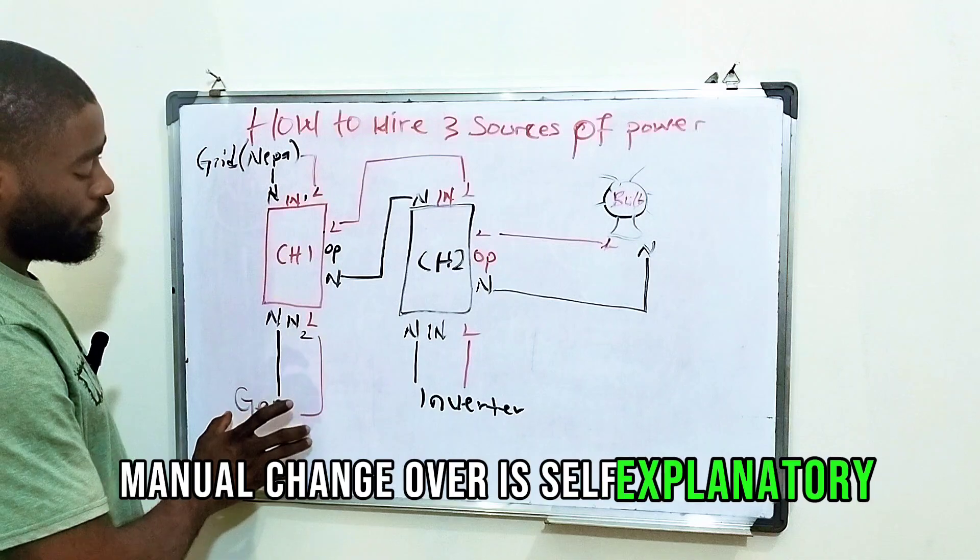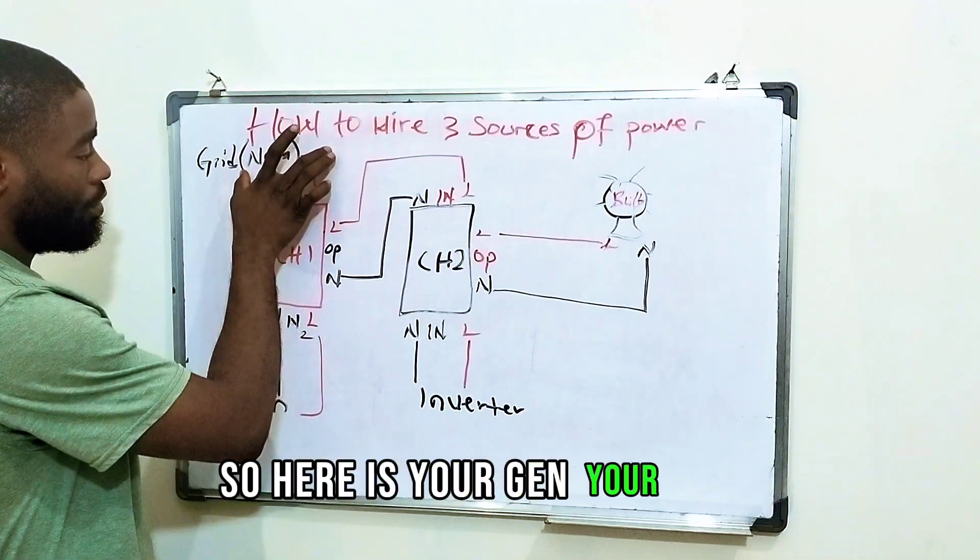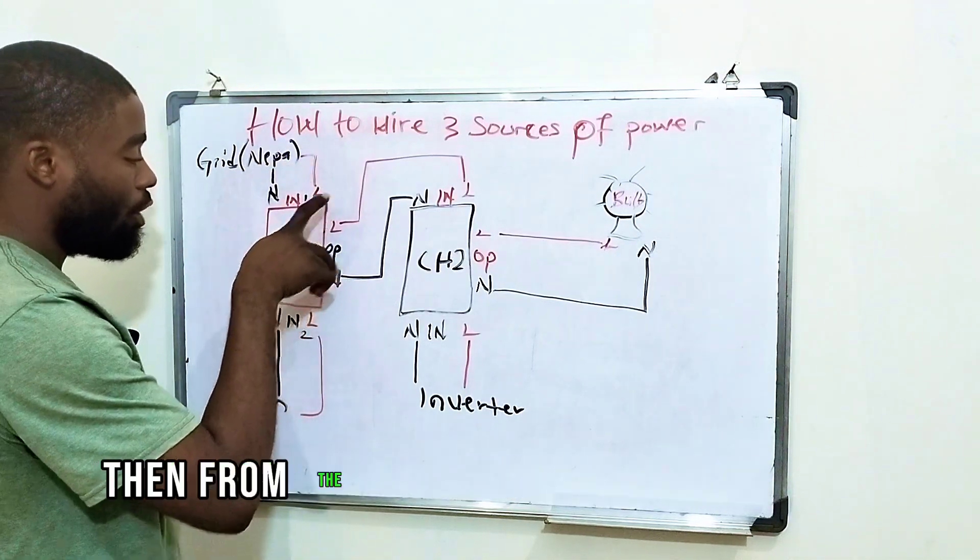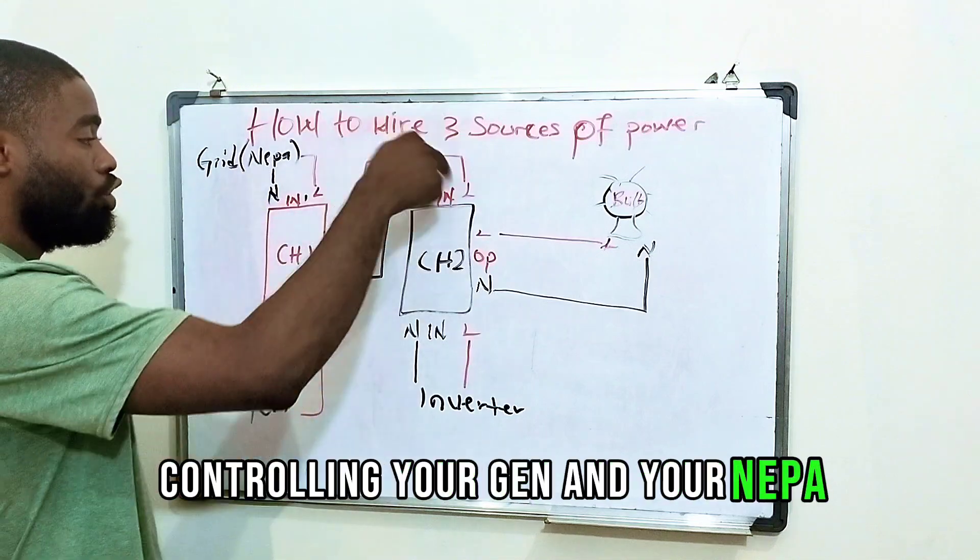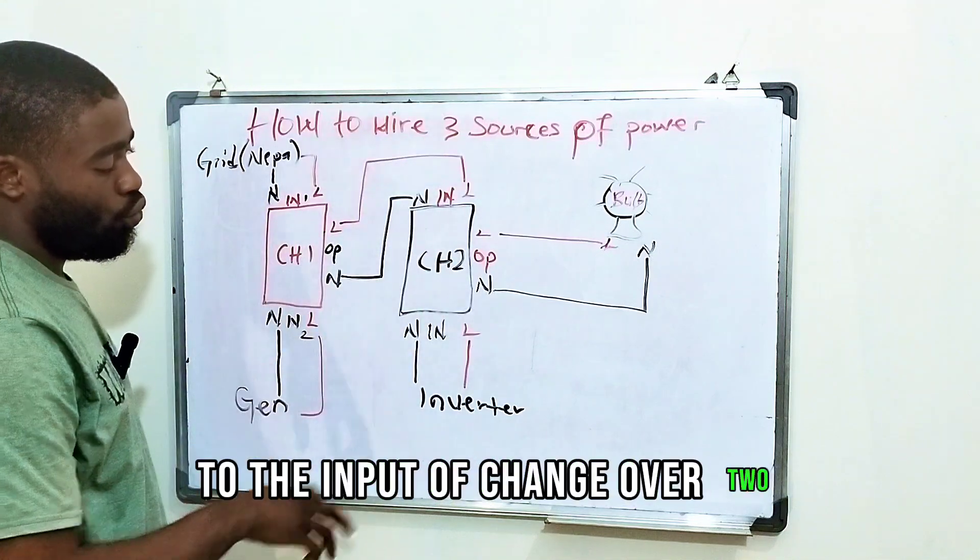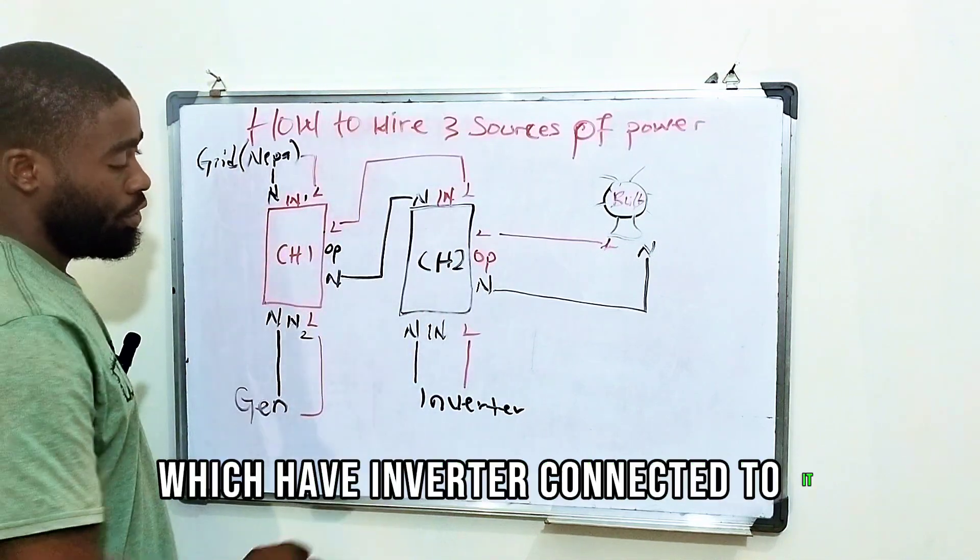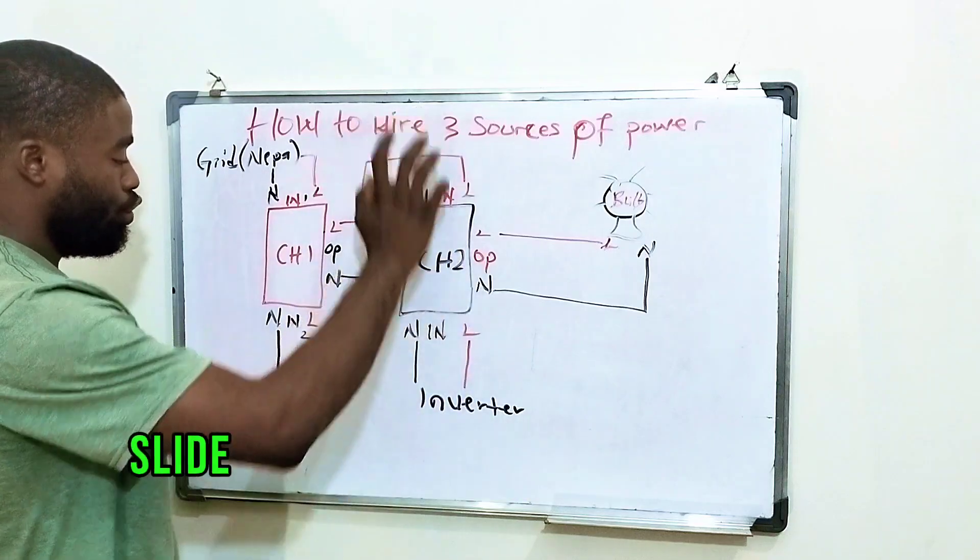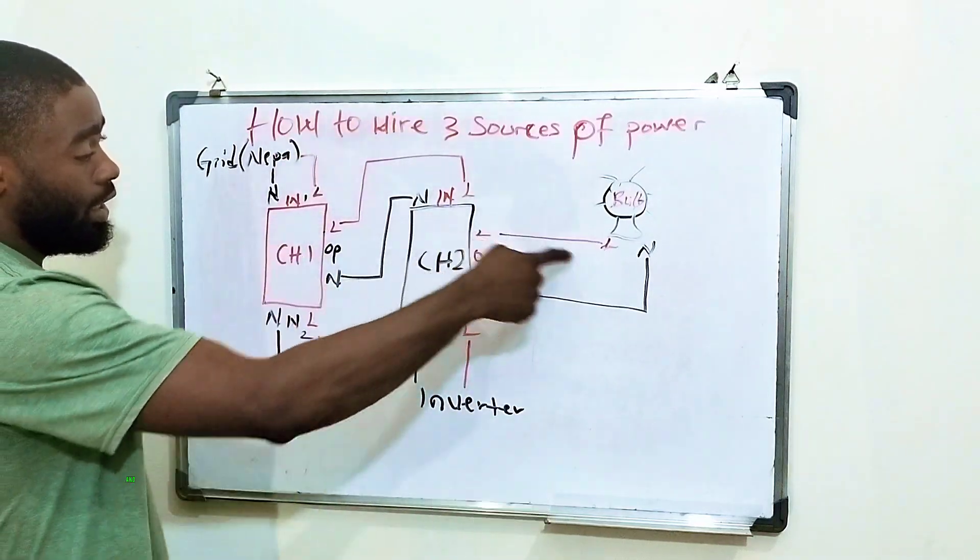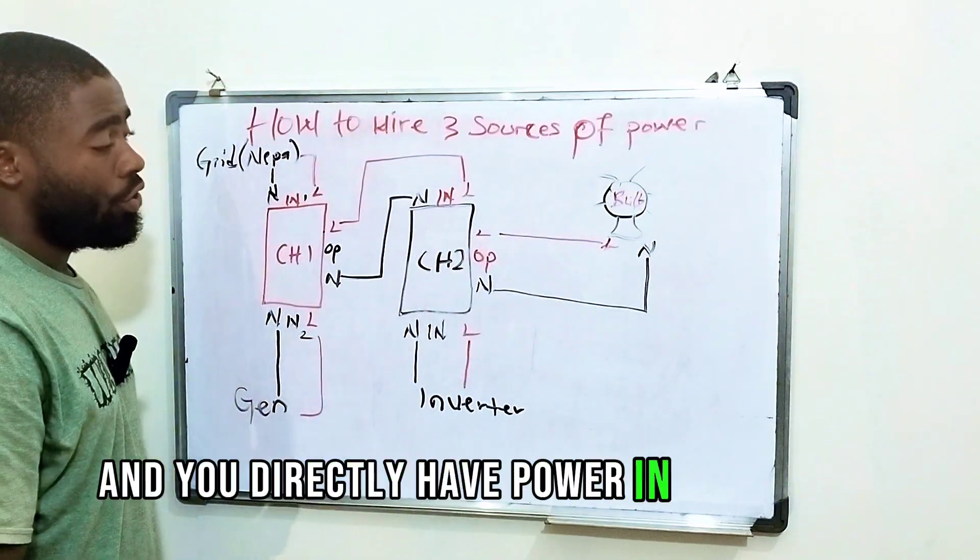It's self-explanatory. So here is your gen, your NEPA. Then from the output of your changeover controlling your gen and your NEPA to the input of changeover two which has inverter connected to it. So you can just slide between any of these sources of power and you directly have power in your house.